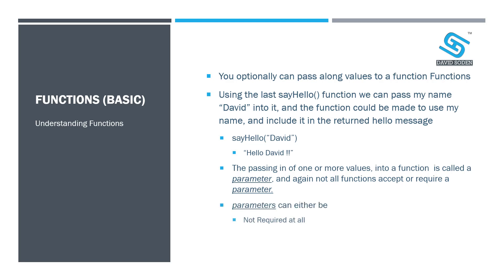Parameters can either be not required at all — like when we first called the hello function without passing in David and it just said 'hello' — or they can be required, where the function needs that input to work. In some cases you can program the function to optionally take in an input: if you provide it, it'll include that information; if nothing is provided, it'll just say hello. That's essentially how a function works at its most basic level. That's it for this video and we'll see you in the next one.